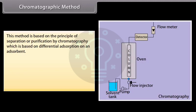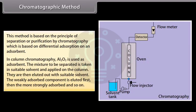Chromatographic method. This method is based on the principle of separation or purification by chromatography which is based on differential absorption on an absorbent. In column chromatography, Al2O3 is used as absorbent. The mixture to be separated is taken in suitable solvent and applied on the column. They are then eluted out with suitable solvent. The weakly absorbed component is eluted first, then the more strongly absorbed and so on. This method is suitable for such elements which are available only in minute quantities and the impurities are not very much different in their chemical behavior from the element to be purified.